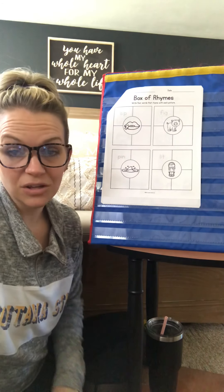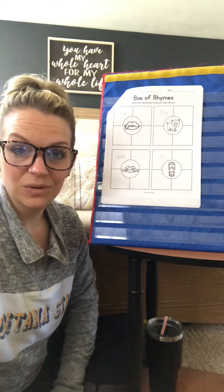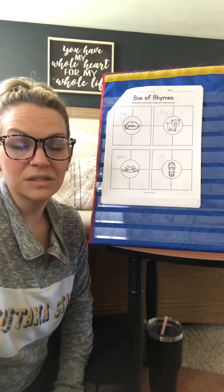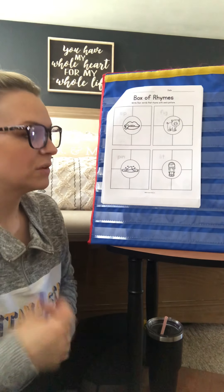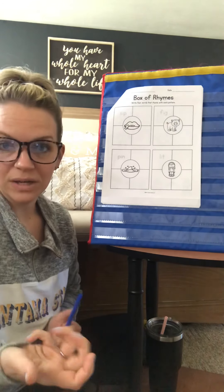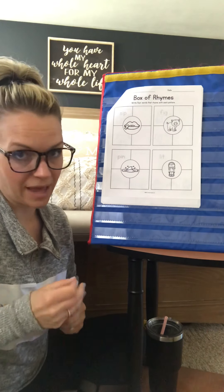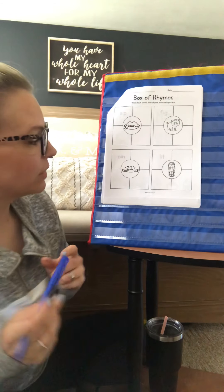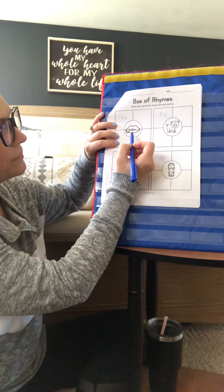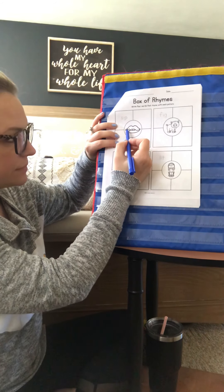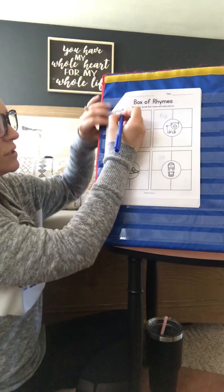If you already did it, you can still grab that and check over your work with me — see if you came up with some of the same words, if you have different ones, or if you need to fix anything. If you haven't done it yet, great! You can kind of pick and choose which pages you do every day. There's no set rule to that. What you're going to do is look at the picture and the word that's already there for you, and trace the first word.